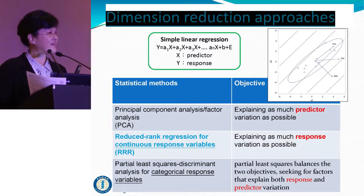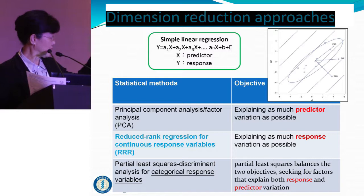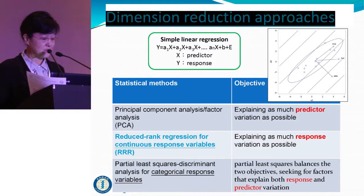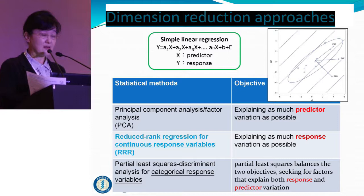I would like to propose that it may be better to use some other methods, like reduced rank regression, which explains more of the response variable variation. Also, partial least squares discriminant analysis works with categorical response variables, while reduced rank regression is better for continuous variables like blood chemistry. All of these methods incorporate the health outcome directly, so they may provide more meaningful dietary pattern variations.